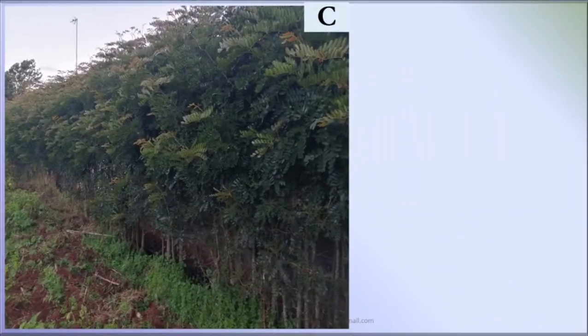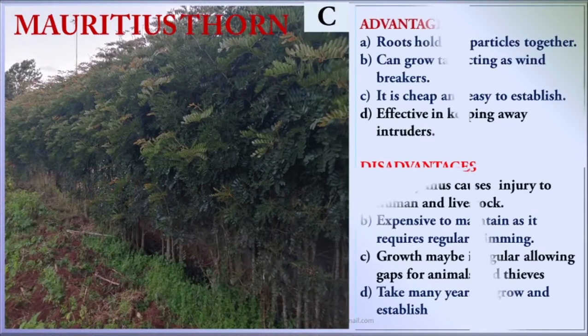Fence C is known as Mauritius Stone. Its advantages: number one, the roots hold soil particles together; number two, they can grow tall, acting as windbreakers; number three, it is cheap and easy to establish; and number four, it is effective in keeping away intruders. Some disadvantages: it is thorny and causes injury to humans and livestock; it is expensive to maintain as it requires regular trimming; growth may be irregular, allowing gaps for thieves and animals; and they take many years to grow and establish.